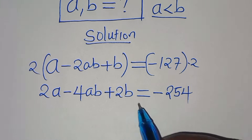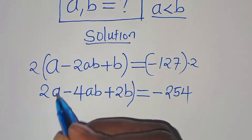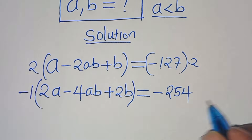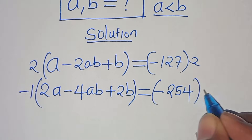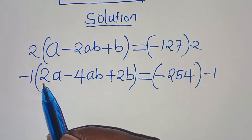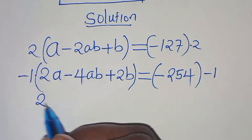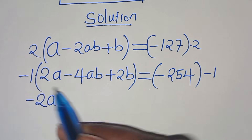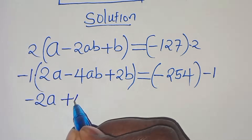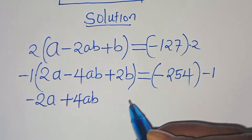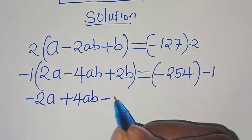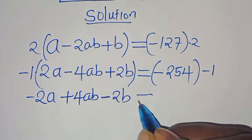The next step is to multiply both sides by minus 1, so we have minus 2a plus 4ab minus 2b equals 254.